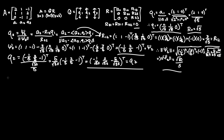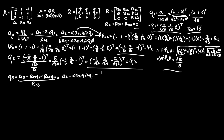Let's move on to the final column of Q, which is Q3. Q3 equals psi3 over the magnitude of psi3, where psi3 equals A3 minus the two projections R13*Q1 minus R23*Q2. This is equivalently A3 minus the inner product of A3 and Q1 times Q1, minus the inner product of A3 and Q2 times Q2, over its magnitude.